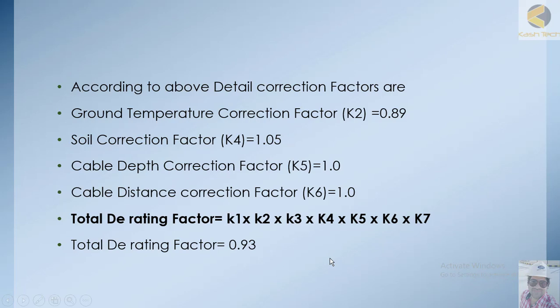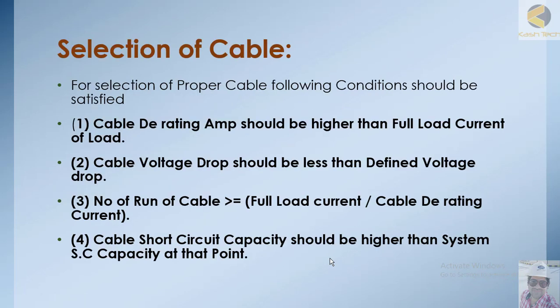For selection of a proper cable, the following conditions must be satisfied: cable derating amperes should be higher than the full load current; cable voltage drop should be less than the defined permissible voltage drop; the number of runs must be determined; and cable short circuit capacity should be higher than the system short circuit capacity at that point.